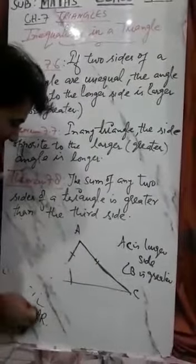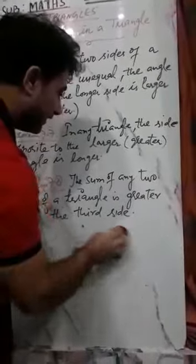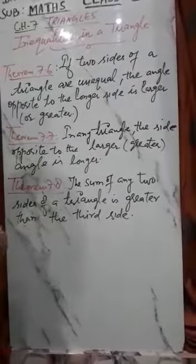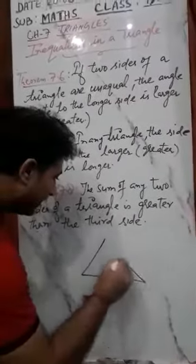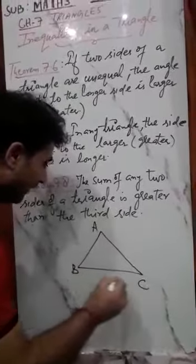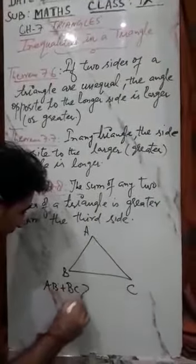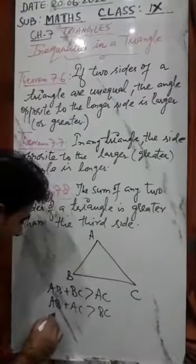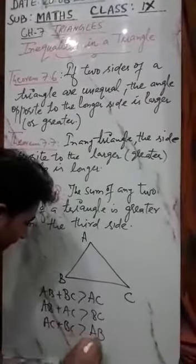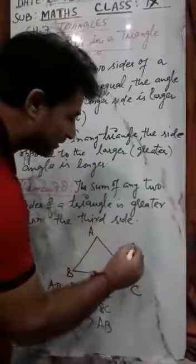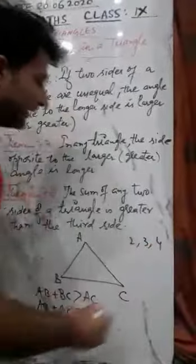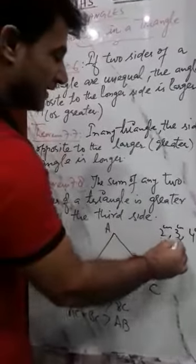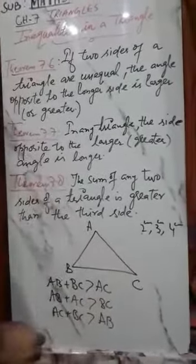The third theorem: the sum of any two sides of a triangle is always greater than the third side. A triangle is possible only when the sum of its any two sides is always greater than the third side. For example, in triangle ABC with sides 2, 3, and 4 centimeters, let's check: 2 plus 3 equals 5, which is greater than 4, so this triangle is possible.